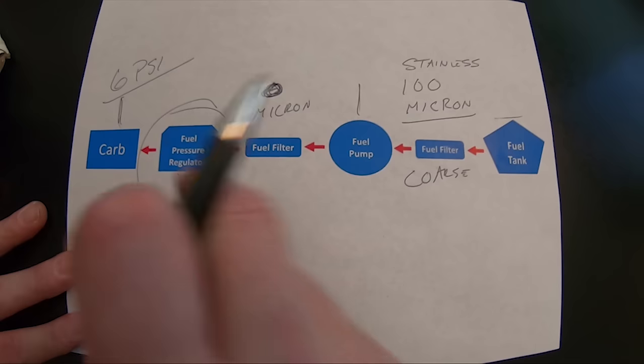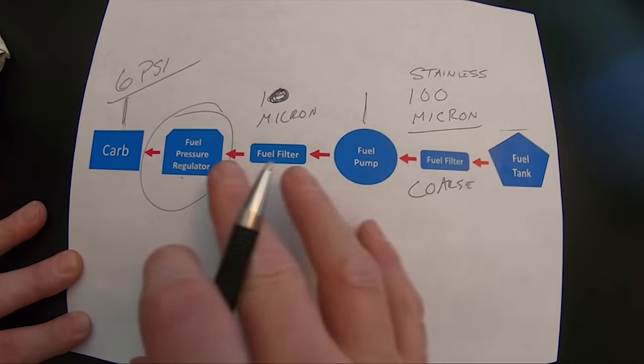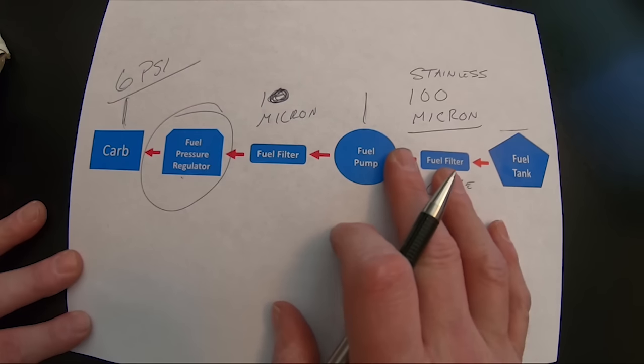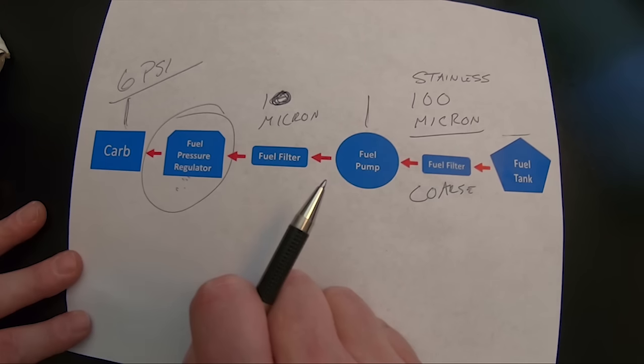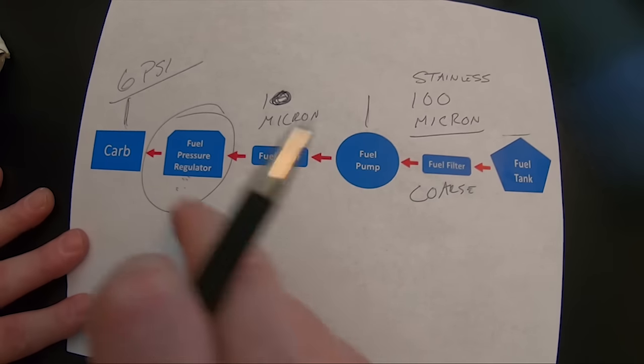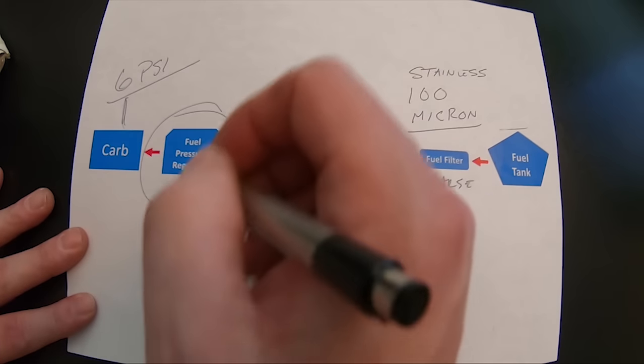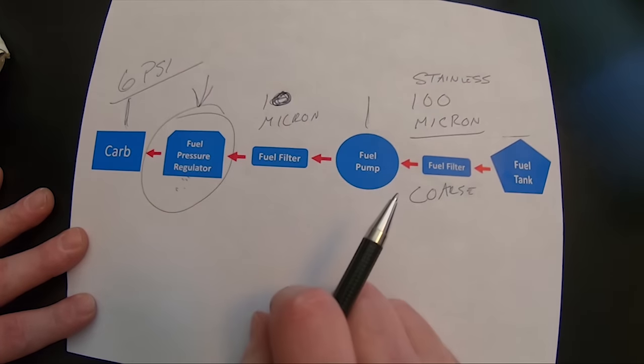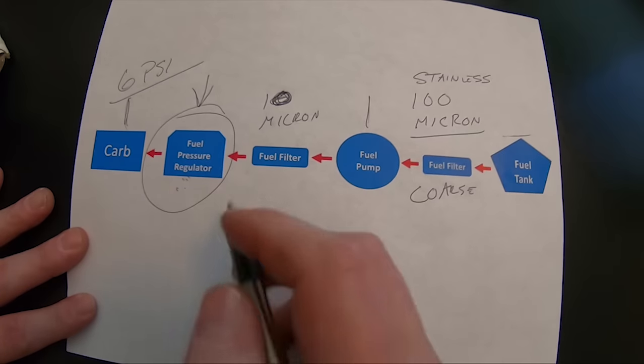So you can actually set it to where you need it to be. This is a very critical part to a carburetor. That's an analog system that doesn't have a lot of adjustment points. Adding in another adjustment point here is a big deal. Don't skip out on it for sure. Add a fuel pressure regulator. Set it at six PSI and you can adjust down from there if you want to. But six is a good starting point. Then you get to the carburetor.